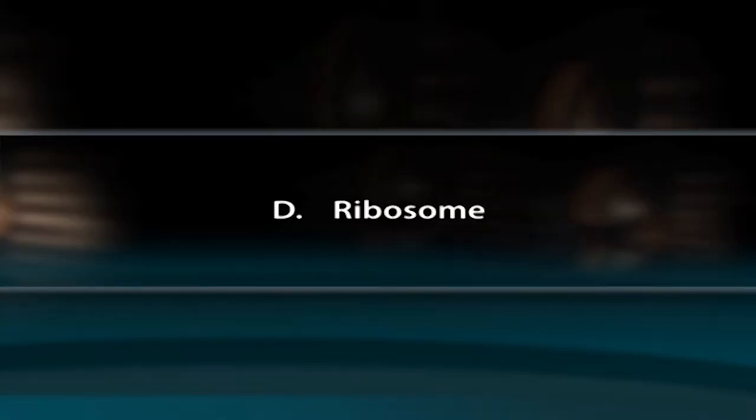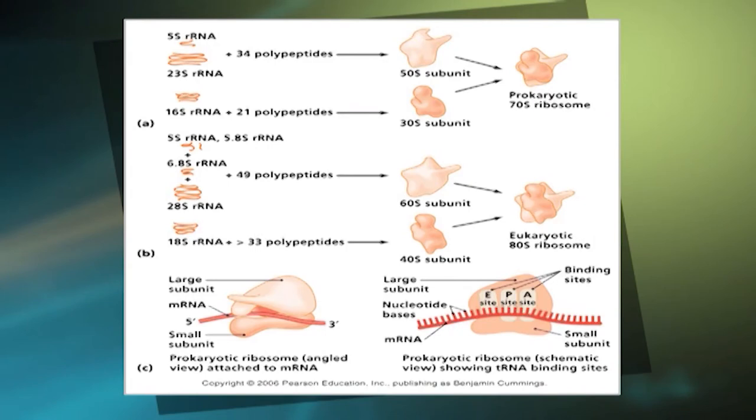Ribosomes are ribonucleoprotein particles formed by RNA and protein. Most ribosomal proteins are small basic proteins whose basic charge reflects their ability to interact with negatively charged RNA. The ribosome has three sites for tRNA binding: the aminoacyl site (A site), the peptidyl site (P site), and the exit site (E site). With respect to the mRNA, the three sites are oriented 5' to 3' as E, P, A, because ribosomes move toward the 3' end of the mRNA. The A site binds the incoming tRNA complementary to the codon; the P site holds the tRNA with the growing polypeptide chain; the E site holds the uncharged tRNA.